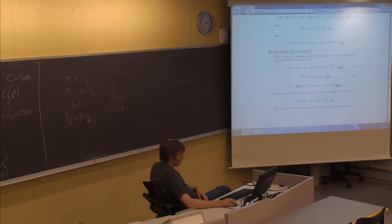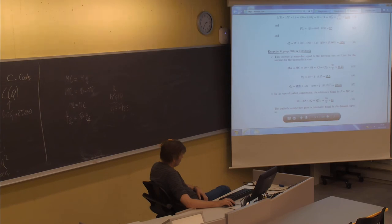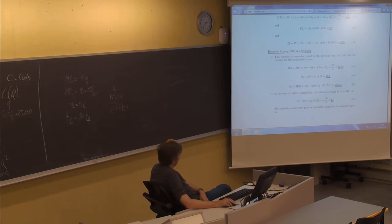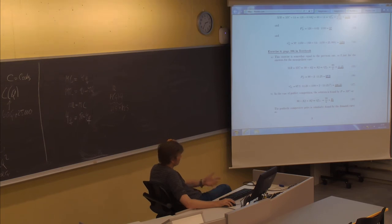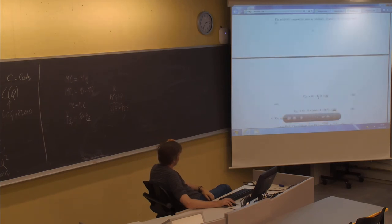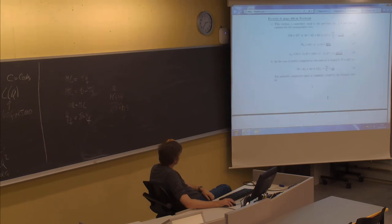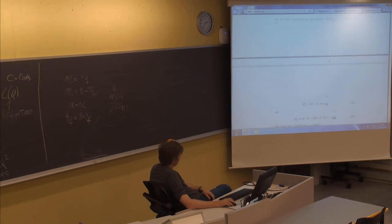Price is given through the demand curve and we have the marginal cost, so we equate them. Setting 90 minus 2Q equal to 4Q gives 6Q equals 90, so the perfectly competitive quantity Q_PC is 90 divided by 6, which turns out to be 15. You can see the quantity has changed drastically compared to the monopoly situation.